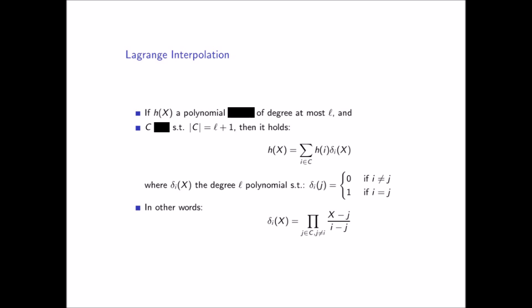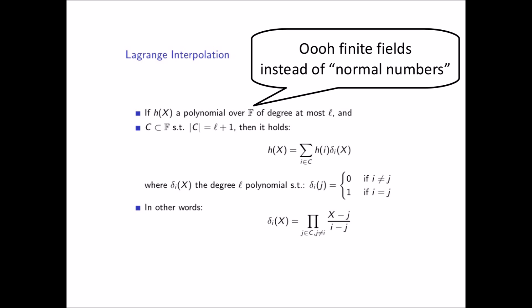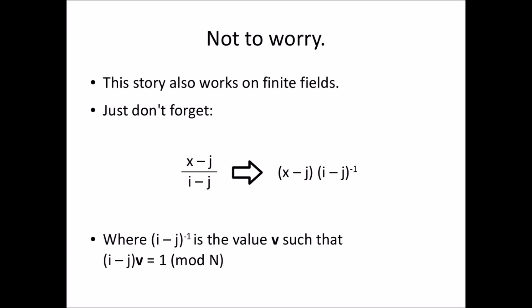Now in most cryptography courses and textbooks, you will find that we are talking about functions and polynomials over finite fields rather than normal numbers. If that's the case, don't worry — this story also applies to finite fields. You just should not forget that instead of division, you have to multiply with the modular inverse of the value, in this case i minus j.